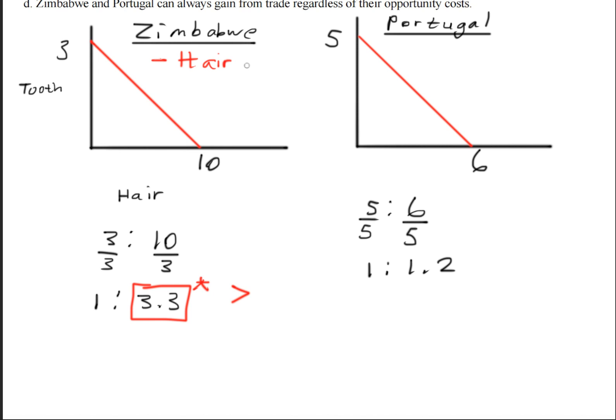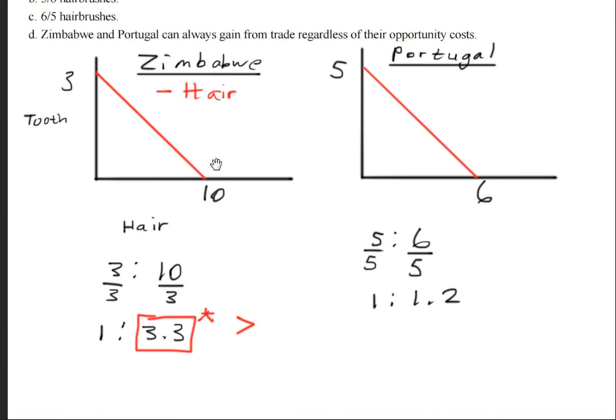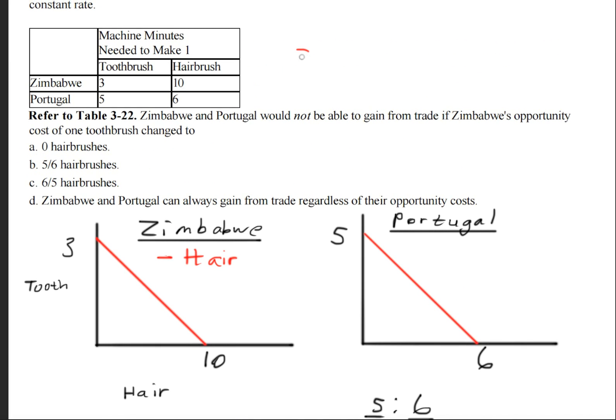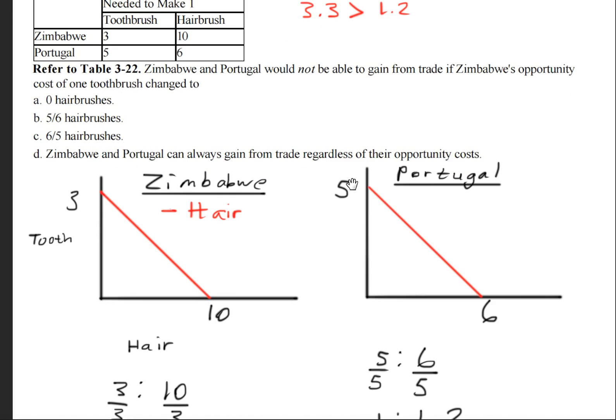I'll just write here. And I'm going to make note of that up here. So I'm going to write three point three is greater than one point two. And this will fall under the hairbrushes. That will come back later on.